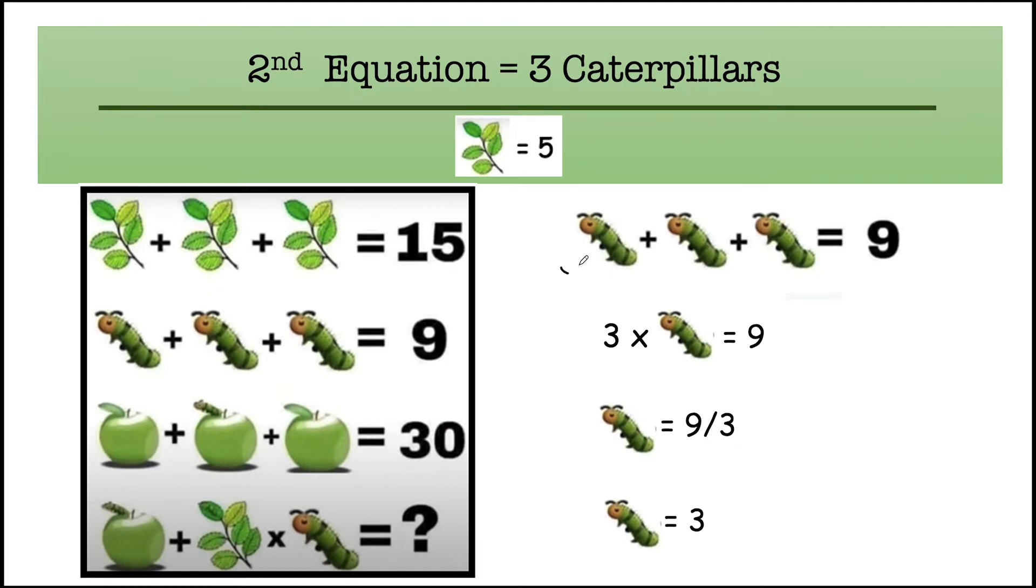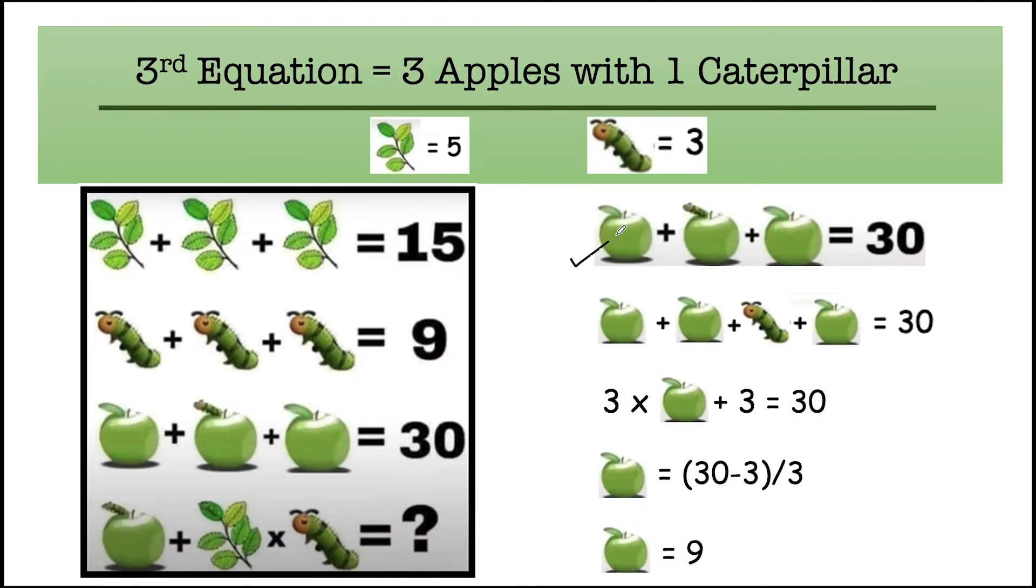Moving on to our second equation, here you can see there are three caterpillars and their total value is equal to nine. So solving this equation will give the final value of caterpillar as three.